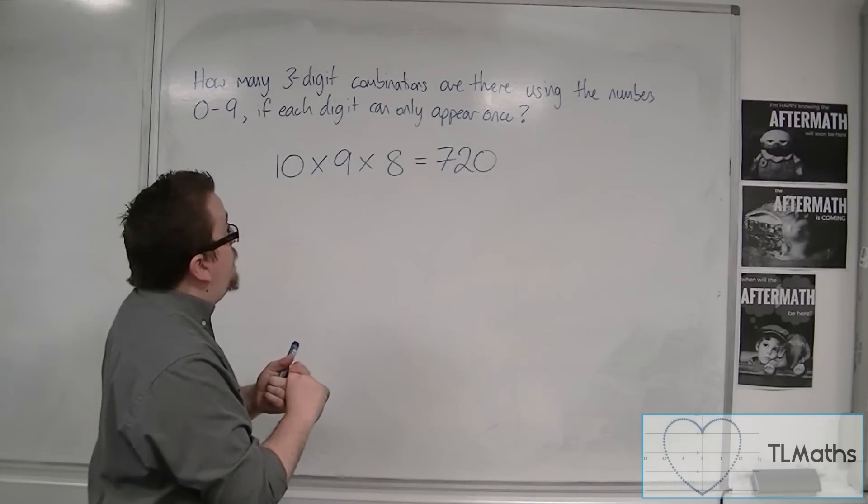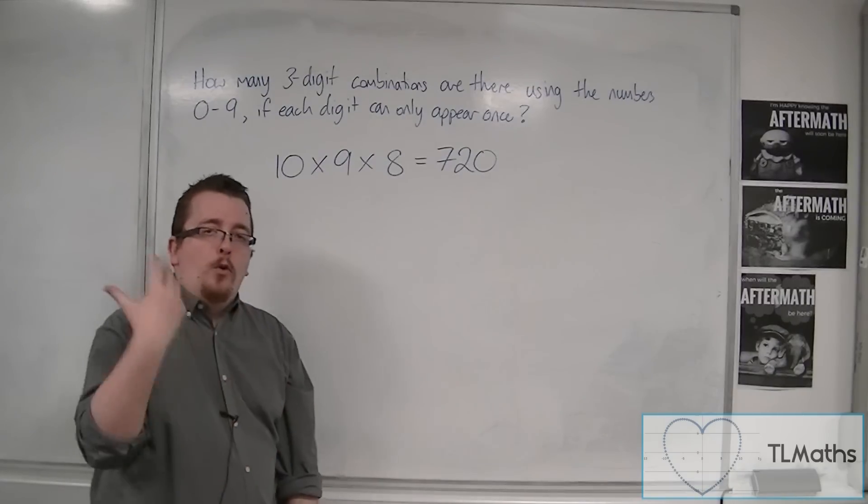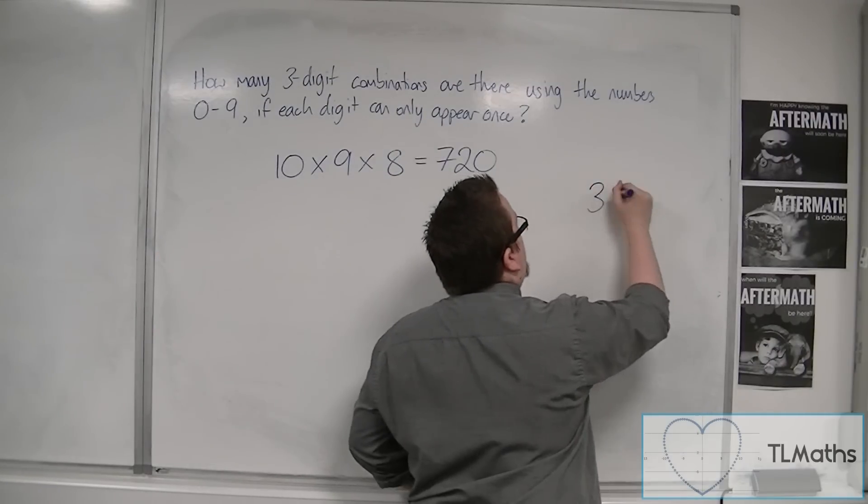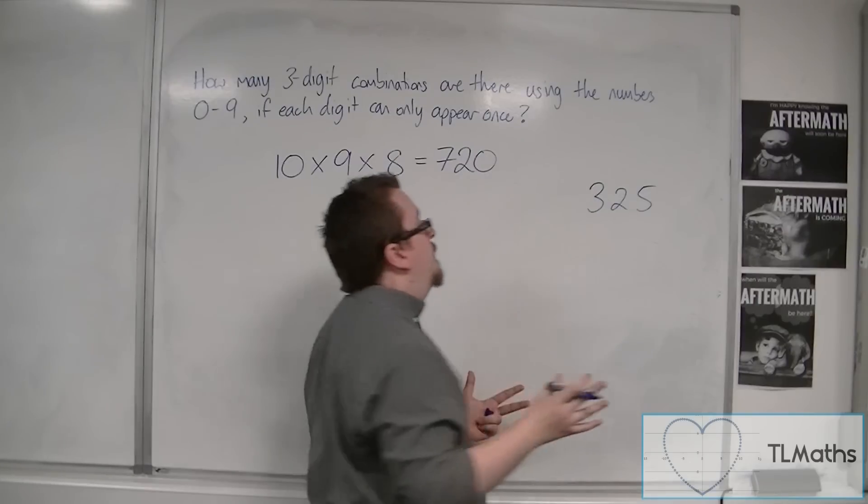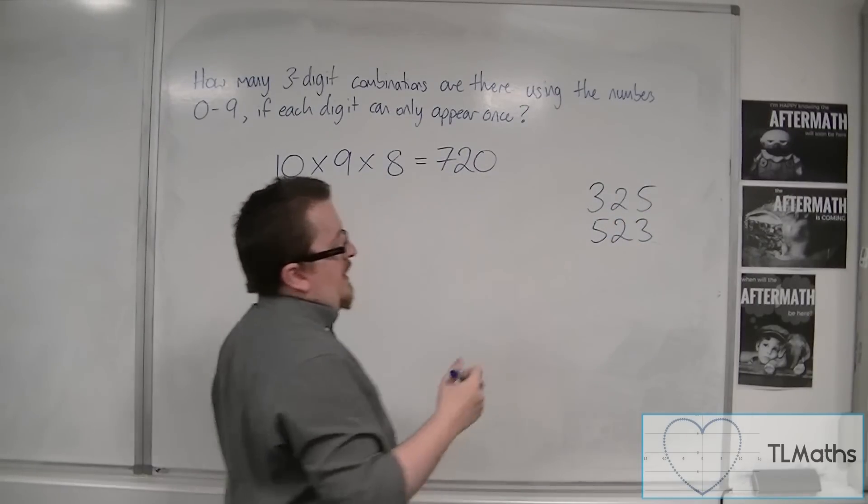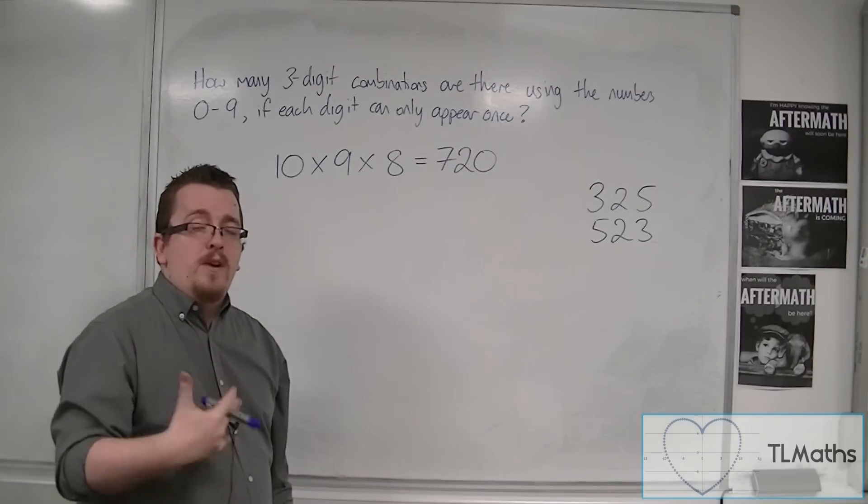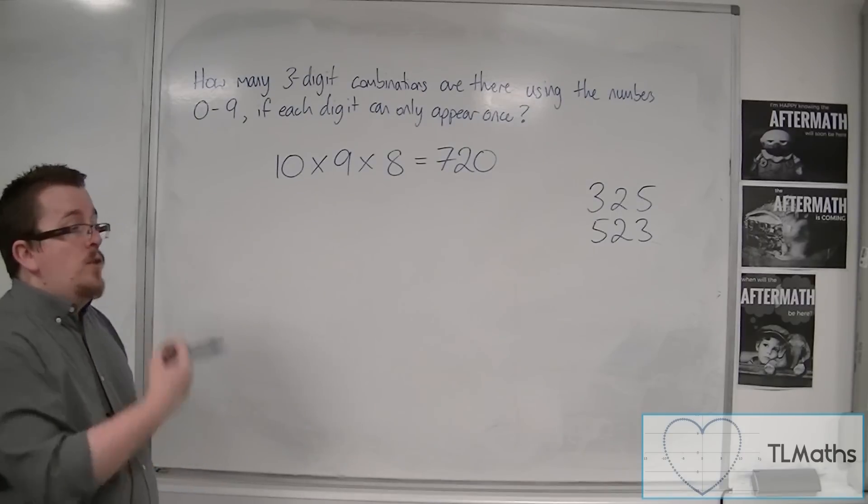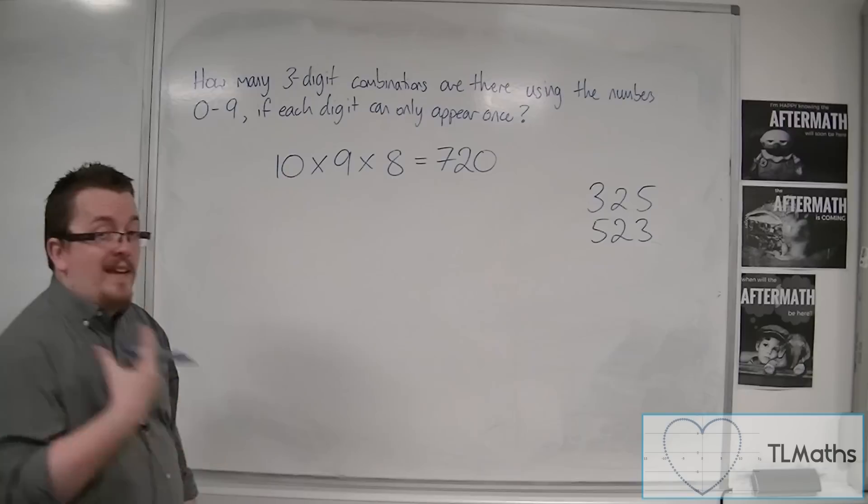However, as we're now looking at combinations and the order no longer matters, that means that 3, 2, 5 is regarded as exactly the same as 5, 2, 3. It's just that the numbers have switched order. Now obviously, in a practical context, if this was a password, then clearly the order does matter. But in this case, because we're looking at combinations, it doesn't.